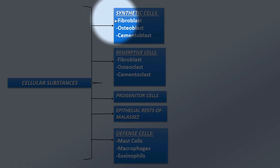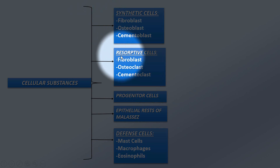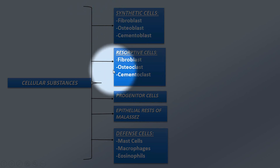Synthetic cells include fibroblasts, osteoblasts, and cementoblasts. Resorptive cells include fibroblasts, osteoclasts, and cementoclasts. Notably, fibroblasts are common to both synthetic and resorptive cells.